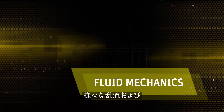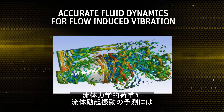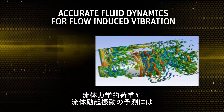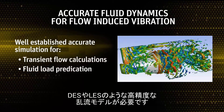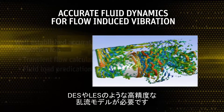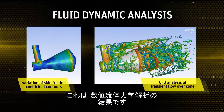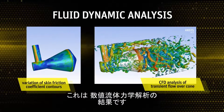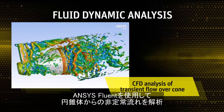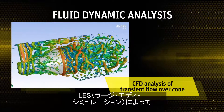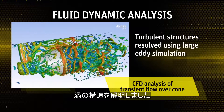ANSYS fluid solutions are used across a wide range of turbulent and transient flow simulations. Accurate turbulence models including DES and LES are required to predict fluid dynamic loads as well as calculate flow induced vibration. Here we see sample results from a computational fluid dynamics analysis of the transient flow over the cone performed using ANSYS Fluent, with turbulent structures resolved using large eddy simulation.